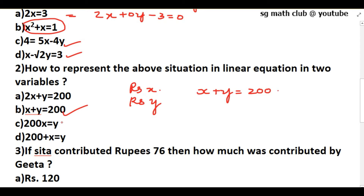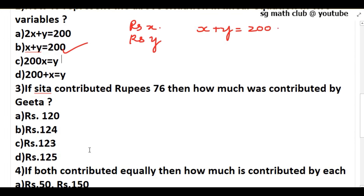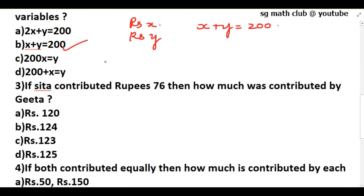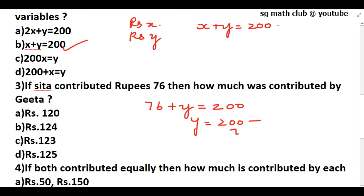If Sita contributed rupees 76, how much did Gita contribute? Substituting x = 76 into x + y = 200 gives y = 200 − 76 = 124. So Gita contributed rupees 124 and Sita contributed rupees 76.